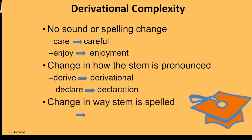Some derived words are created without any sound or spelling changes in the base form, such as 'care' and 'careful,' or 'enjoy' and 'enjoyment.' However, there may also be changes in how the stem is pronounced or stressed. For example, the vowel sound changes from a schwa in 'derive' to an R-controlled vowel sound in 'derivational,' or the long E vowel sound in 'declare' changes to a short E in 'declaration.' There can also be consonant pronunciation changes, as in 'medic' and 'medicine,' or spelling changes as in 'blaze' and 'blazing.'